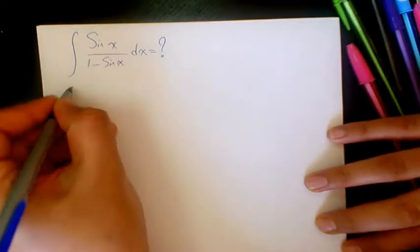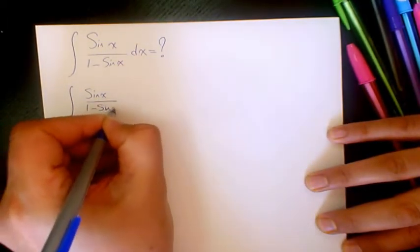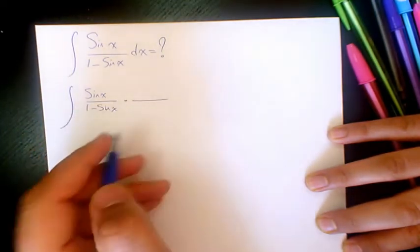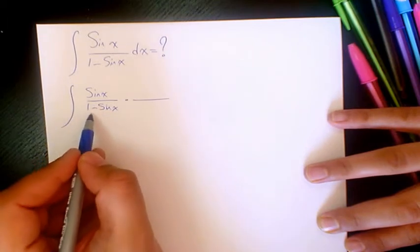So what I need to do, I have sine x over 1 minus sine x. I just need to multiply the numerator and denominator by the conjugate of the denominator.